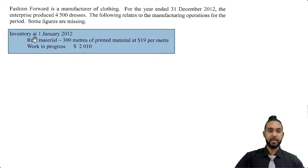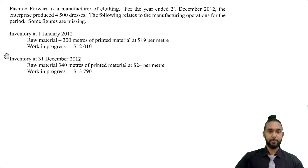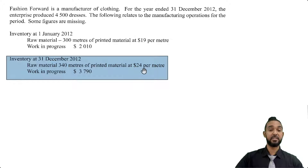The first thing I'm seeing is inventory at 1 Jan 2012 — that's at the start of the year. Raw material: 300 meters of printed material at $19 per meter. And then we have work in progress at start as well. Then inventory at 31st December 2012 — that's closing stock or closing inventory because it's at the end of the year. We have raw material: 340 meters of printed material at $24 per meter, so prices went up.